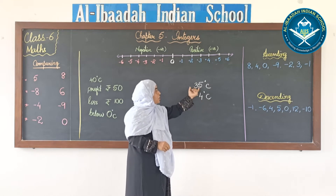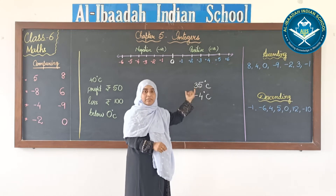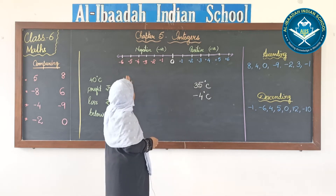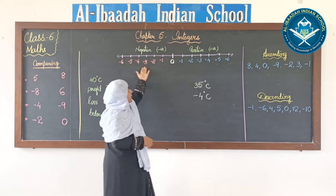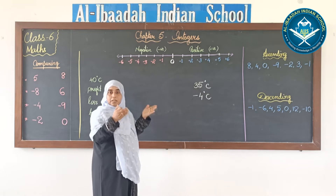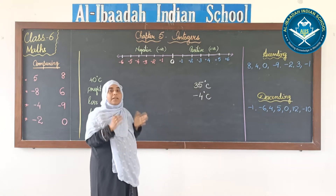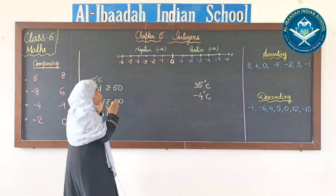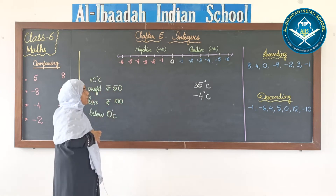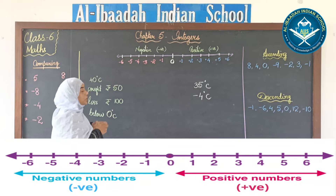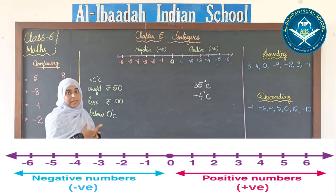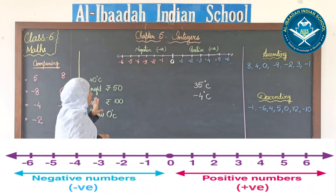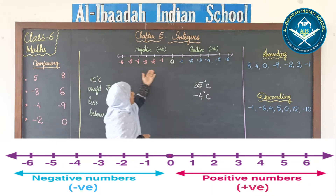We use both types of numbers — positive as well as negative. The group of numbers that has both positive and negative groups in one set, we call them integers. Now we will try to understand how we show them on a number line and what the value of these positive and negative numbers is.